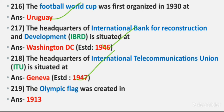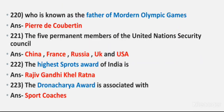Question 219: The Olympic flag was created in. Answer: 1913. Question 220: Who is known as the father of modern Olympic Games? Answer: Pierre de Coubertin.